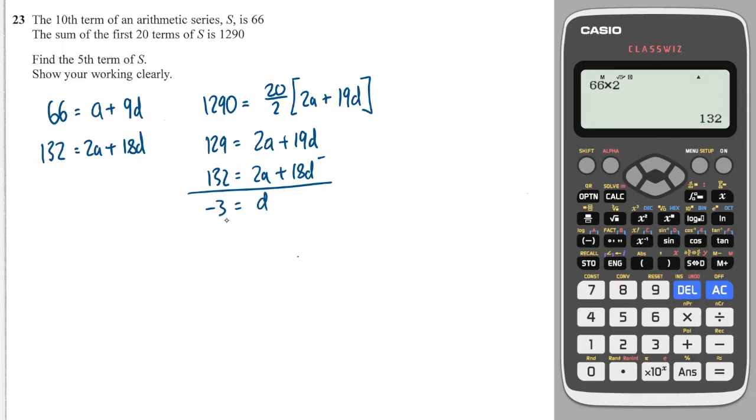So subbing back into one of these equations, I'll take this one up here. 66 is equal to a, and 9 times minus 3 is minus 27. So a is equal to 66 plus 27, which is 93. Okay, great. Now that I've got d and I've got a, I can work out any term in the sequence. It's asked me to find the fifth term.